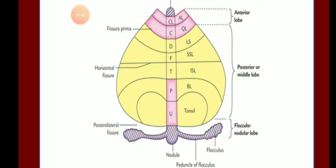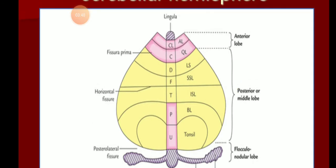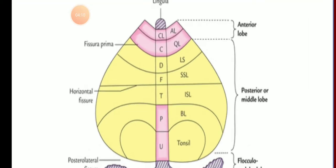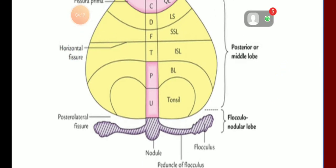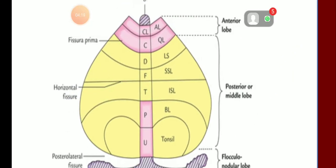Now the parts of the cerebellar hemispheres. Lingula has no lateral extensions. Starting from the central lobule downward, the lateral projections are named: alae (Ela), quadrangular lobule, lobulus simplex, superior semilunar lobule, inferior semilunar lobule, biventral lobule, tonsil, and finally flocculus.